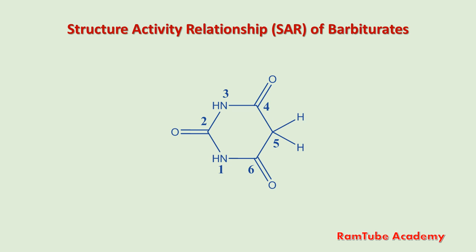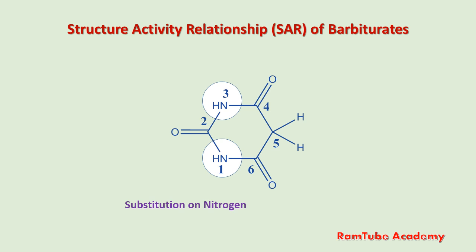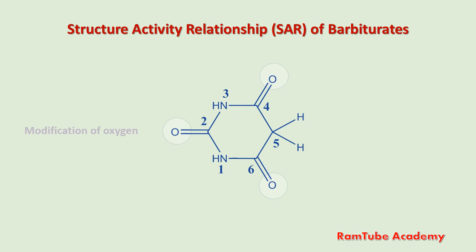This is the structure of barbituric acid. In barbituric acid, three potential sites are available for structural modifications: the first site is 5,5-disubstitution, the second site is substitution on nitrogen, and the third site is modification of oxygen.